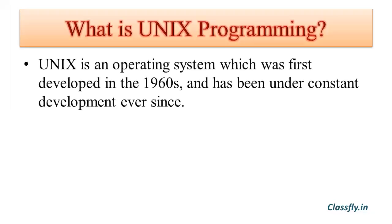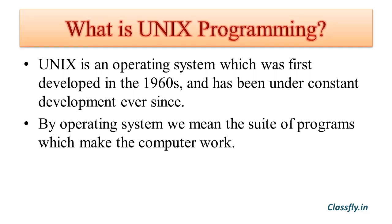UNIX is an operating system which was first developed in the 1960s and has been under constant development ever since. Basically, UNIX is an operating system — by operating system we mean the suite of programs which make the computer work. An operating system is an interface between hardware and the user; it manages hardware and software resources and takes the form of a set of software routines that allow users and application programs to access system resources.